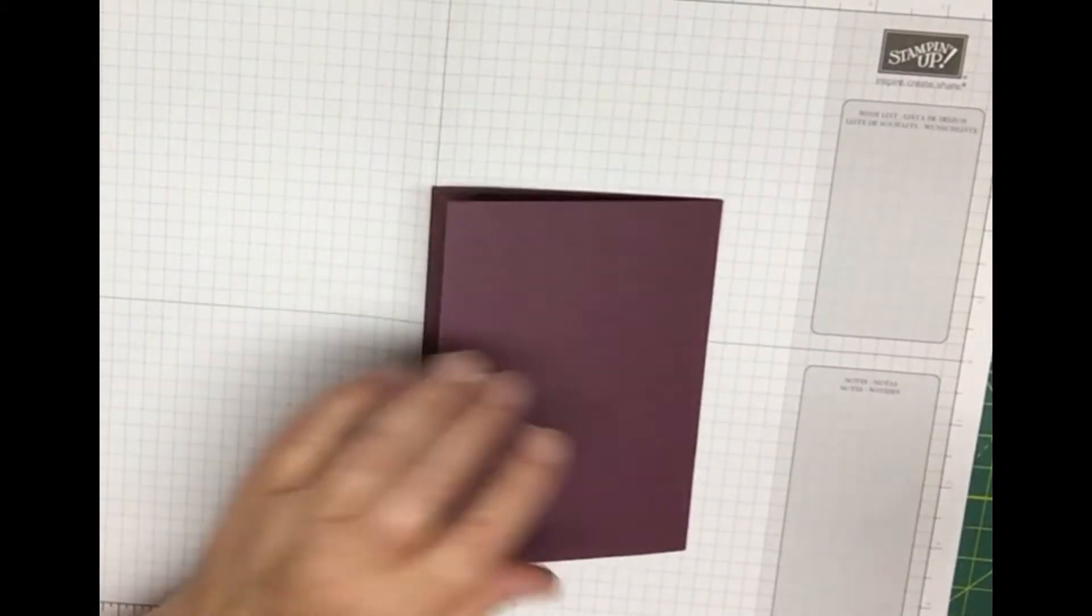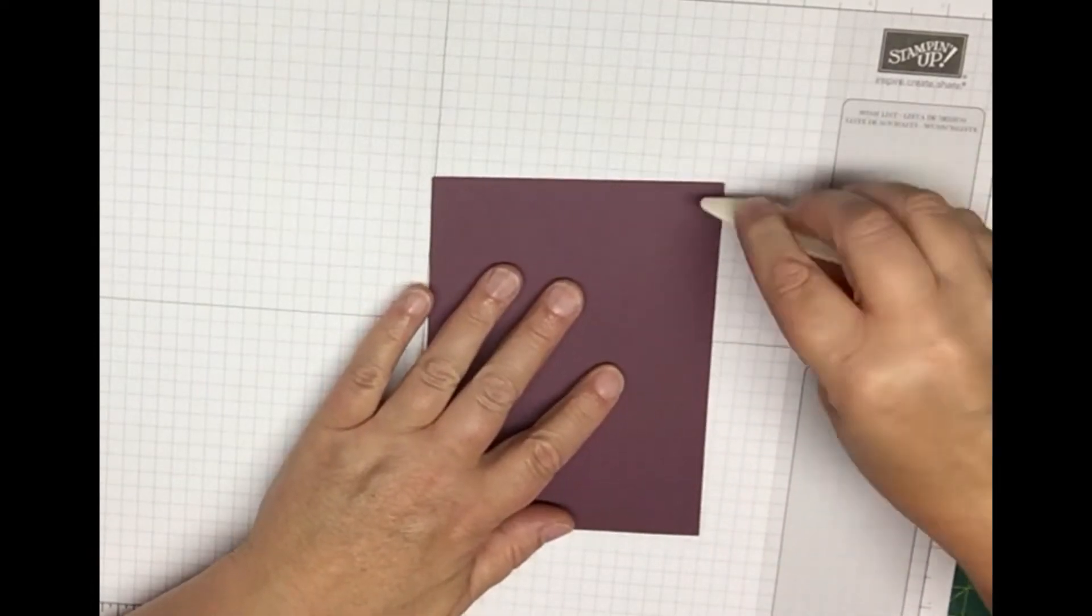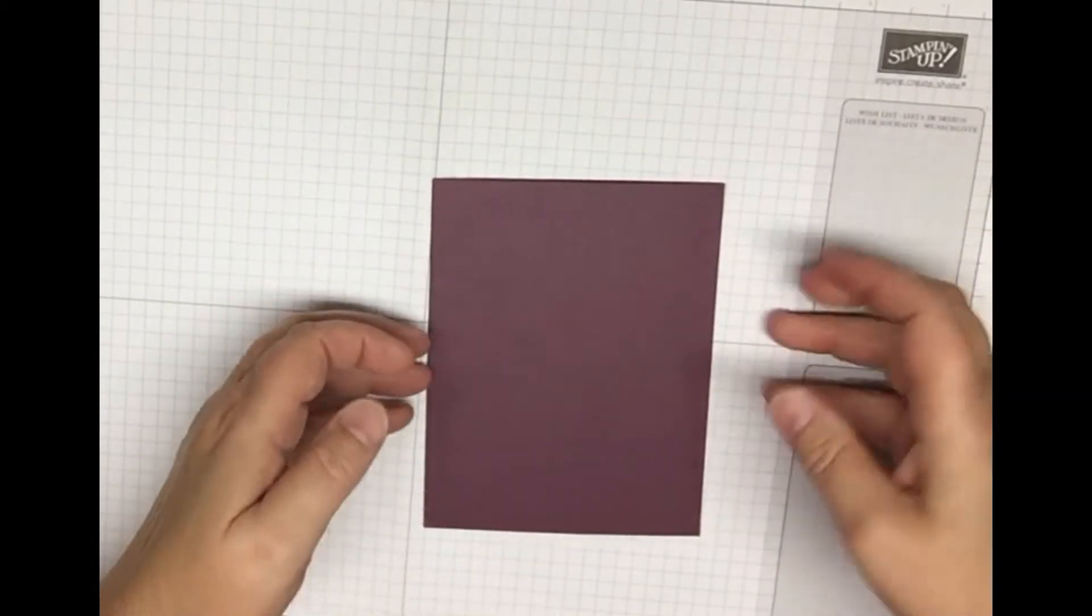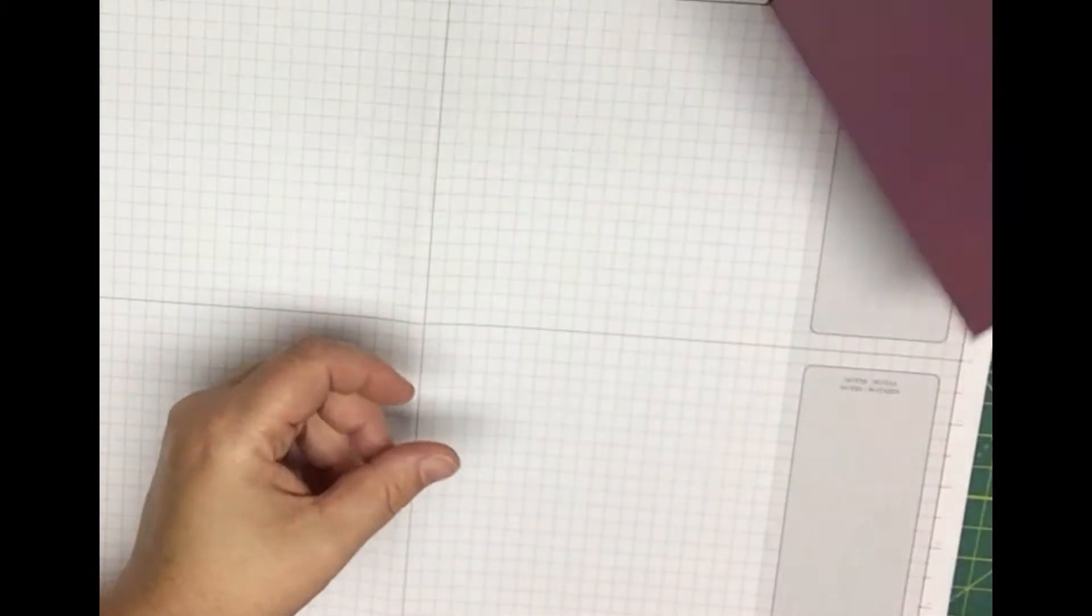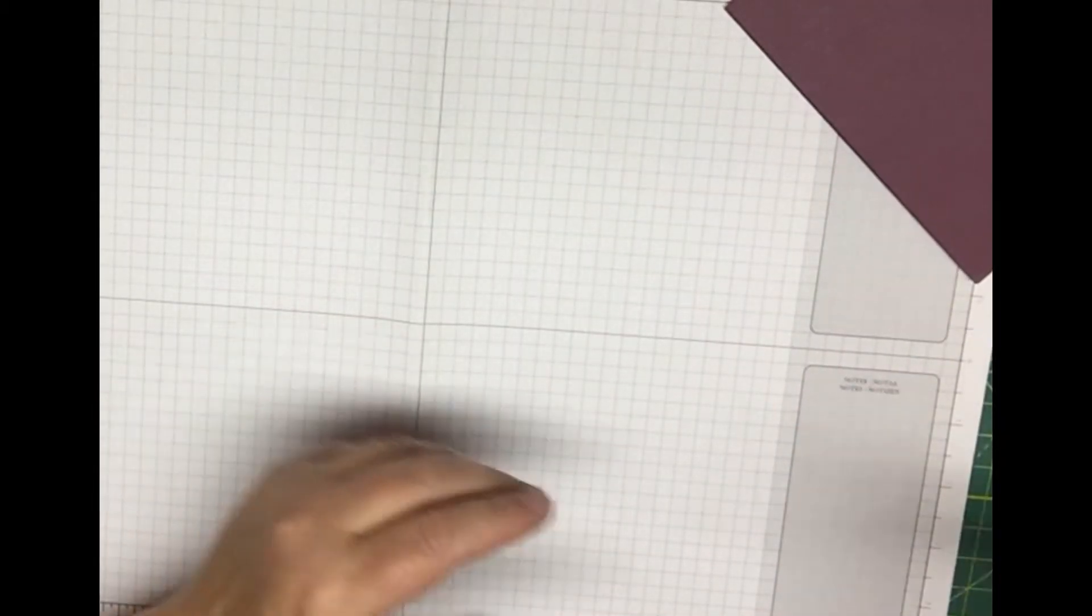So you're just going to take your Fresh Fig card base and we're just going to use our bone folder to kind of give that a nice crease. Then we're going to set that aside and we'll work on that later.